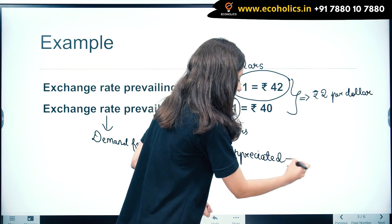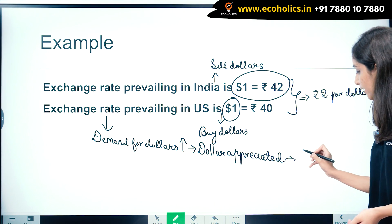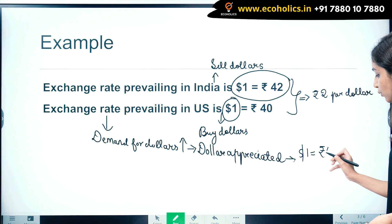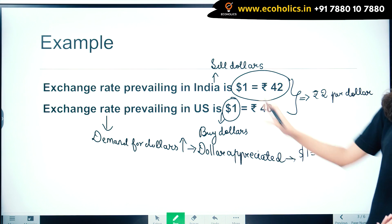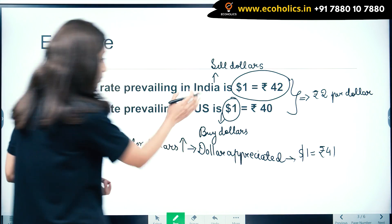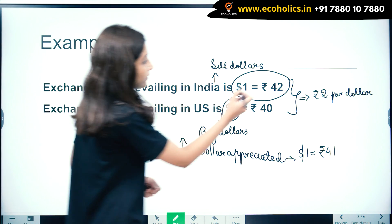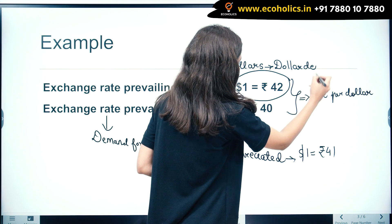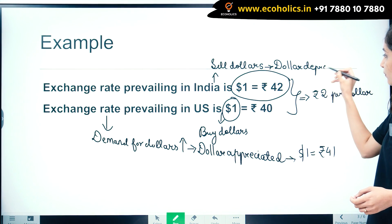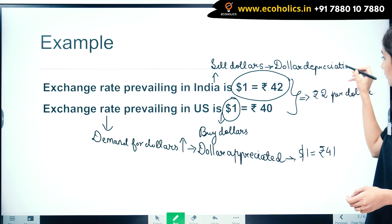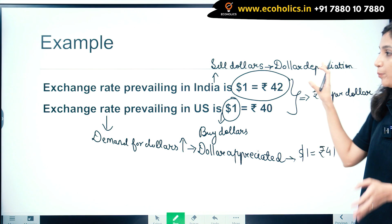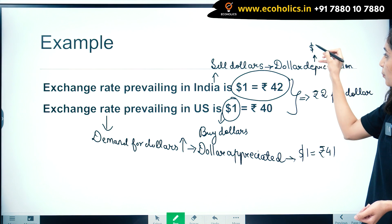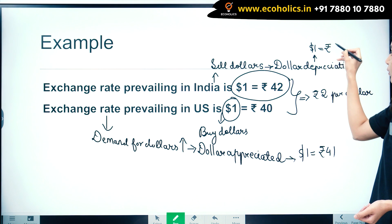With appreciation of the dollar in the US, let's say the exchange rate is now one dollar equal to rupees 41. Similarly, here in India, because arbitrageurs are selling dollars, the dollar is going to get depreciated. So now the exchange rate in India also becomes one dollar equal to rupees 41.